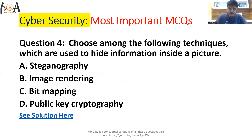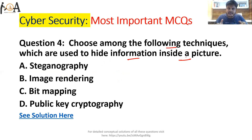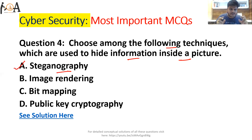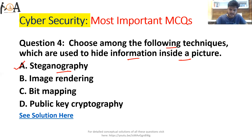Question number four: choose among the following techniques which are used to hide information inside a picture. If you want to store any information inside an image file such as JPG or PNG, that process is called steganography. Steganography is a process of storing or hiding useful information that you want to conceal from the user. So steganography — Option A — is the correct answer.